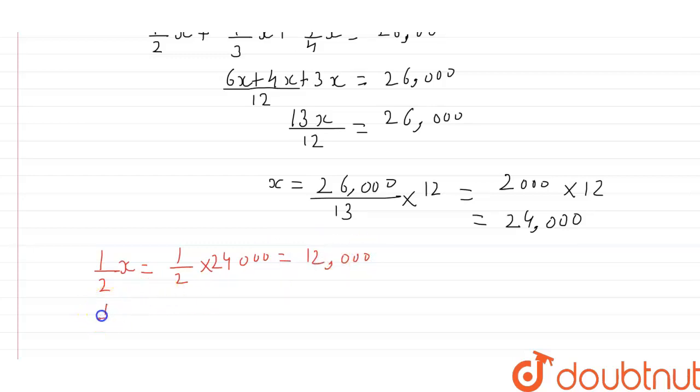So, share of second person is 1 upon 3x, which will be equal to 1 upon 3 into 24,000, which will be equal to 8,000.